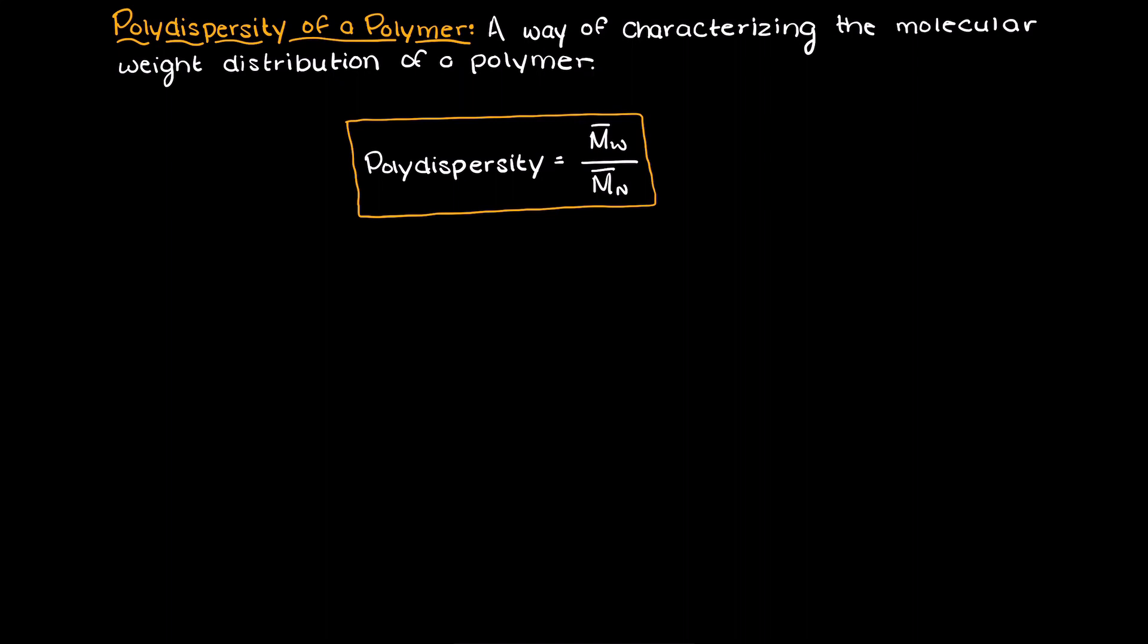Just note that the polydispersity of a polymer is also sometimes referred to as the polydispersity index or the PDI for short. So what does this really mean?